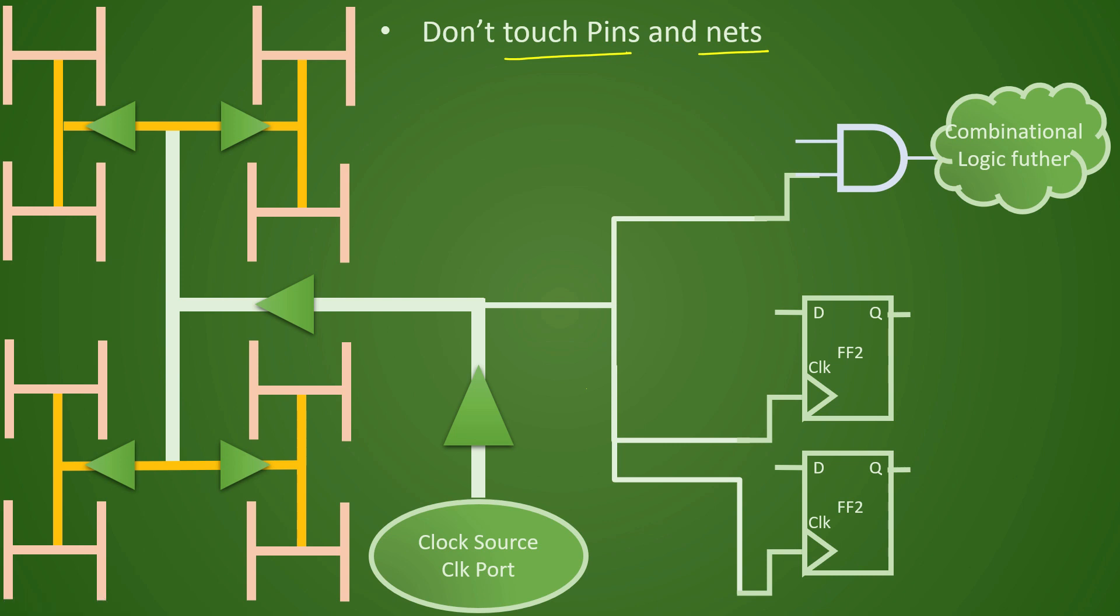Last but not the least we also define some don't touch pins and don't touch nets in the clock tree. So what that means is in this example if we do not want this portion of tree to be balanced or this pin should not be touched for balancing, we can specify don't touch attribute on this particular pin and similarly we can also specify don't touch on a particular portion of the net for balancing.